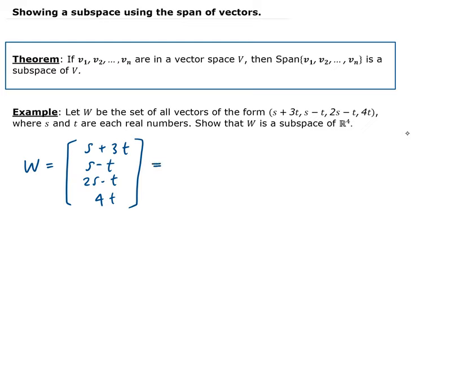So then we can expand this and write it in parametric form. We can factor out the S. So we're going to get 1, 1, 2, and 0.